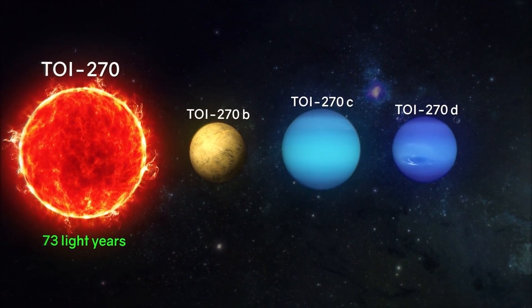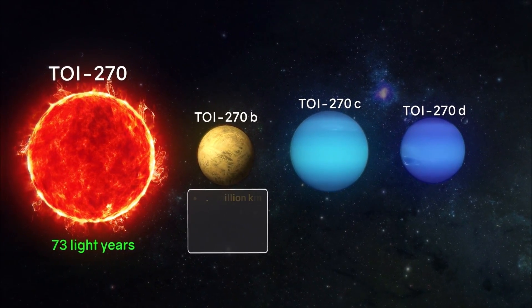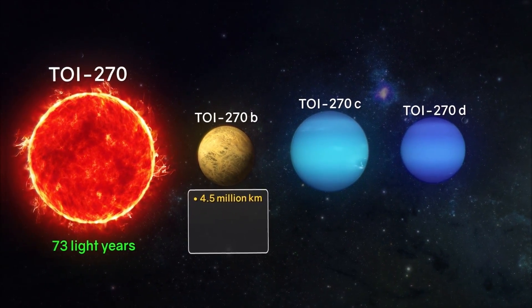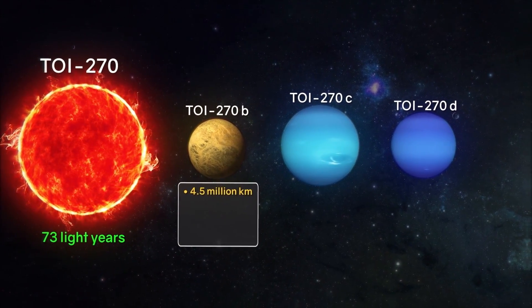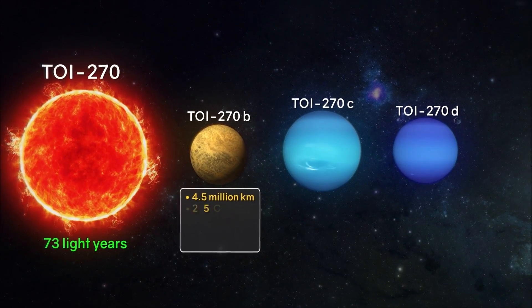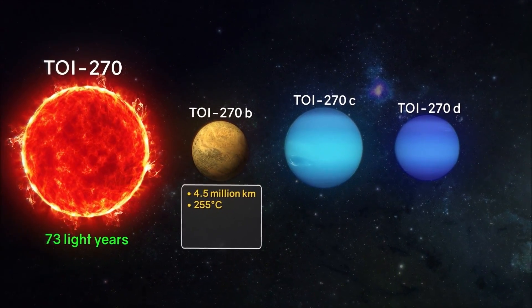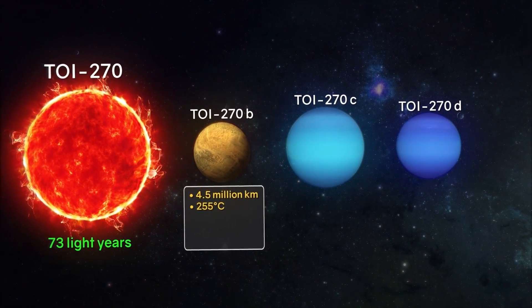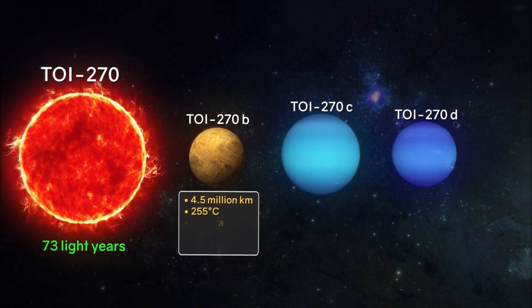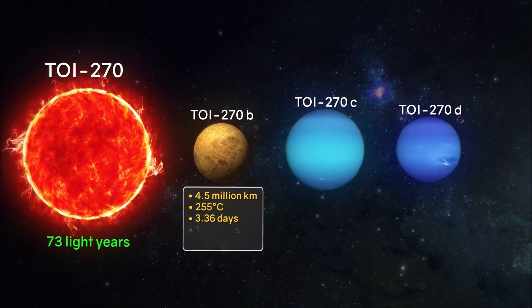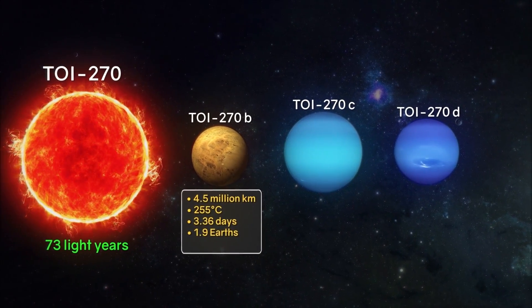Exoplanet TOI-270 b: the distance to the star is about 4.5 million kilometers. This is more than 30 times closer than the Earth is from the Sun. The average surface temperature is 255 degrees Celsius. The period of rotation around the star is 3.36 days. The mass is about 6.6 times that of the Earth.